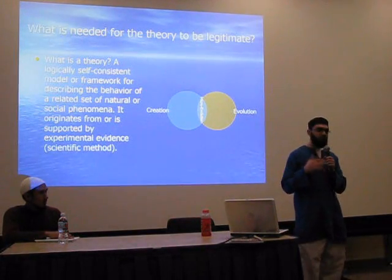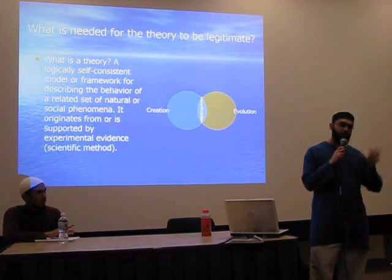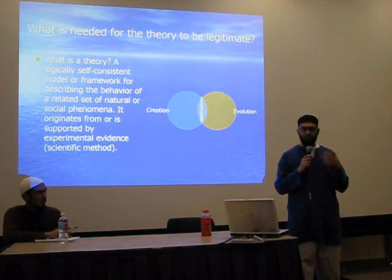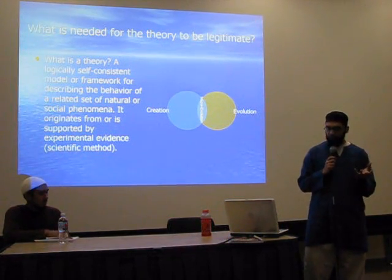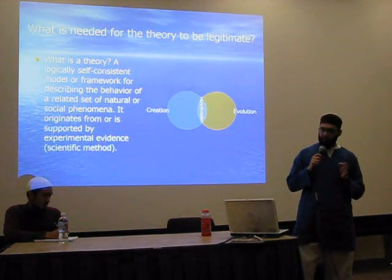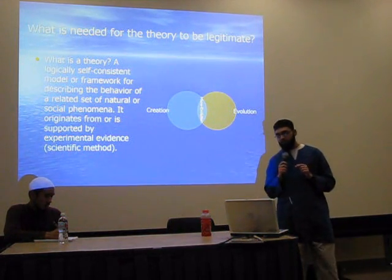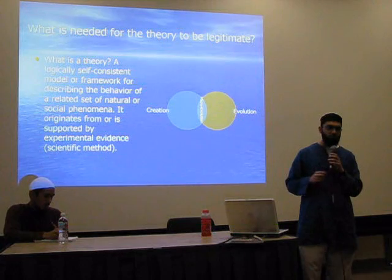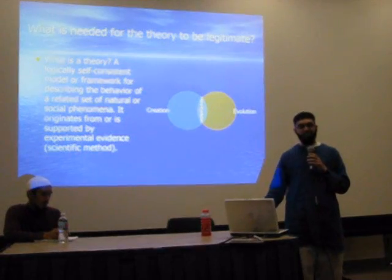So, what is needed for the theory to be legitimate? First of all, what is a theory? A theory is a logically self-consistent model or framework for describing the behavior of a related set of natural or social phenomena. It originates from or is supported by experimental evidence using the scientific method. So you have two models — each one considered a theory, a model, or a framework for describing some behavior.